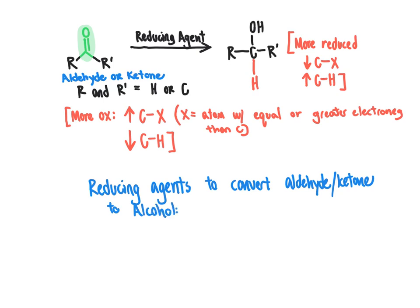The three choices of reducing agents we will typically focus on are: first, hydrogen with a metal catalyst — H2 with, for instance, platinum, palladium, or any other metal catalyst to provide a surface for the reaction to take place on. You will recall that H2 with metal catalyst is also suitable for reducing carbon-carbon double bonds and carbon-carbon triple bonds, so it also reduces alkenes and alkynes.